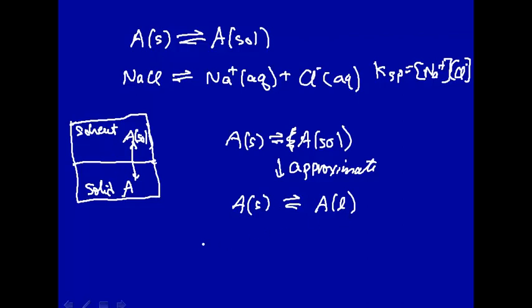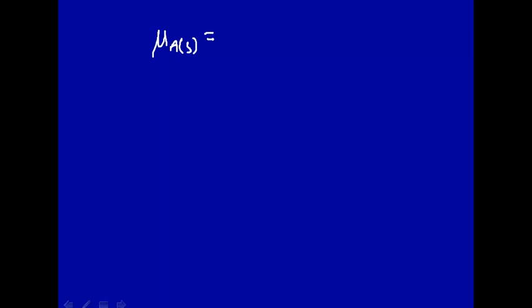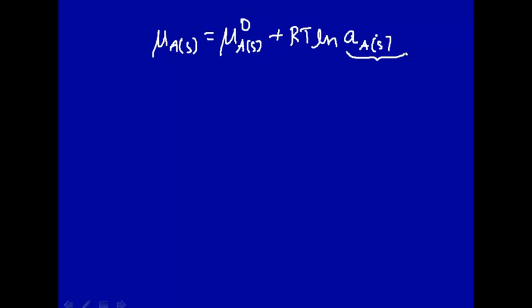This is an equilibrium, so we can make our usual assumption that the chemical potential of A in the solid state at equilibrium equals the chemical potential of A in the liquid state — using liquid as an approximation of solvation. The chemical potential of A in the solid state equals the standard state chemical potential of A in the solid, plus RT times the natural log of the activity of A in the solid. For a pure condensed phase, the activity is 1, so this term becomes 0. Therefore, the chemical potential in the solid state is just the standard state chemical potential.